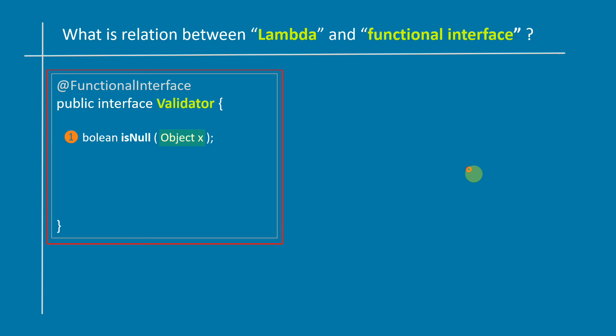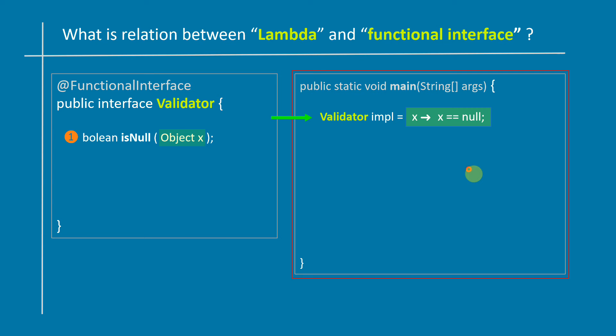Consider we have a functional interface with exactly one abstract method, and a lambda implementation of the same interface. On the left hand side we have a functional interface, and on the right hand side a lambda implementation. Lambda implementation is nothing but an implementation of a single method.